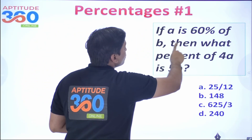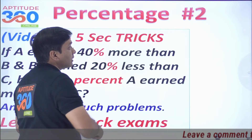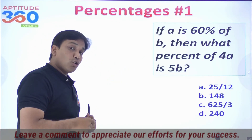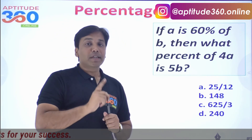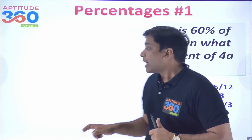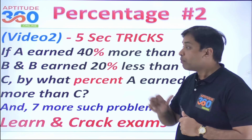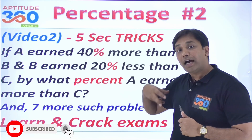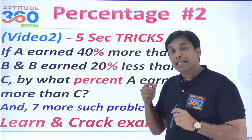Now if you understand this, I have a question: if a is 60% of b, then what percent of 4a is 5b? There are multiple ways to approach this, but in the next video I have the simplest method — you should be able to solve this in 30 seconds. This is going to be the agenda for video number two, because people get confused about where to take 100 and how to solve it algebraically. So I'm going to see you in video number two.